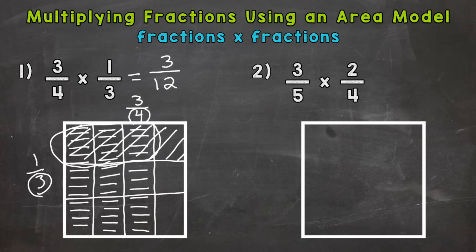So three-twelfths is our answer. So time to simplify if necessary. And here we can simplify. We have a common factor of three. So divide by three. And we get one-fourth. So our area model represents visually three-fourths times one-third, or three-fourths of one-third.